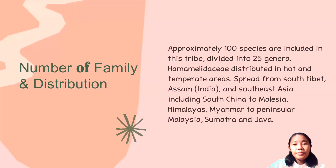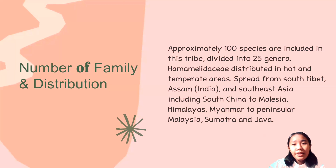Number of this family: approximately 100 species are included in this family, divided into 25 genera. This family is distributed in hot and temperate areas, spread from South Tibet, Assam in India, and Southeast Asia, including South China to Malaysia, Himalayas, Myanmar to Peninsular Malaysia, Sumatra, and Java.